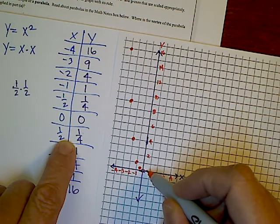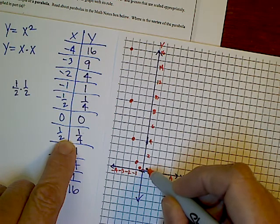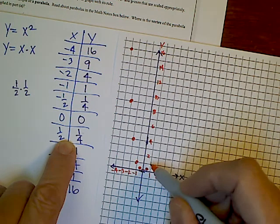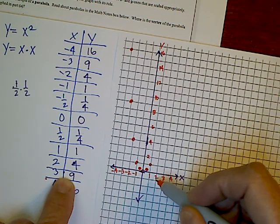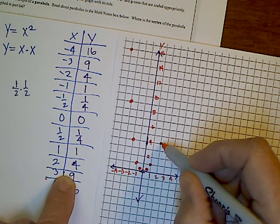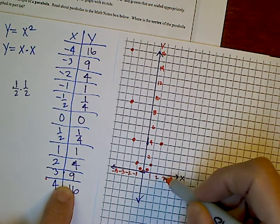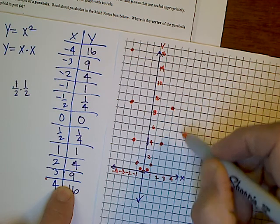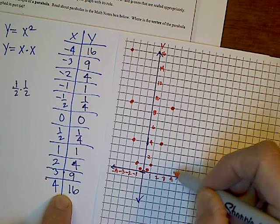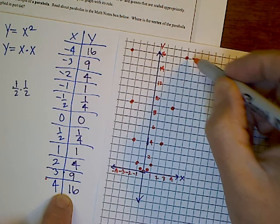Then positive 1 half, positive 1 fourth, again barely above. Then 1, 1. Positive 2, positive 4. Positive 3, positive 9, looks like right there. And then positive 4, positive 16, up to the 16. There we have it.